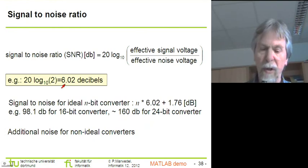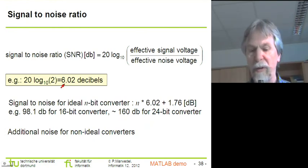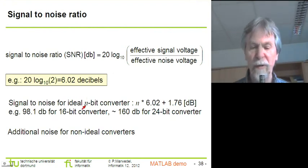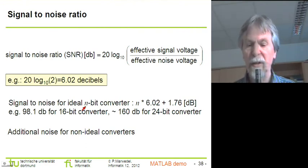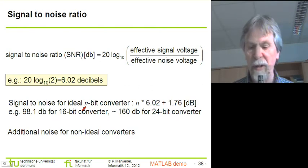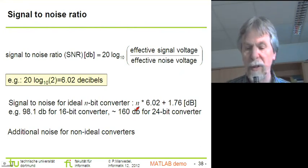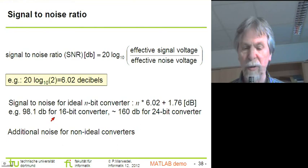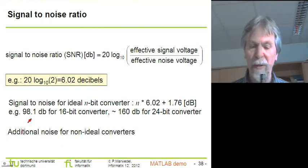If we have an n-bit converter, then each bit of this n-bit converter will provide an additional signal to noise ratio by about six decibels. So therefore if we have an n-bit converter, the overall signal to noise ratio is six times the number of bits roughly, and then there is a little bit of additional signal to noise ratio which is resulting from the form factor of the signals that we're using there. So for example, if we have a 16-bit converter we would have a signal to noise ratio of about 98 decibels.